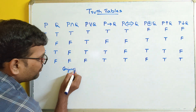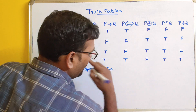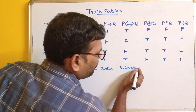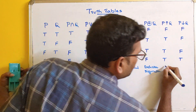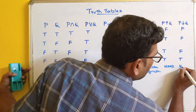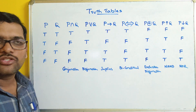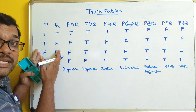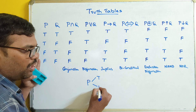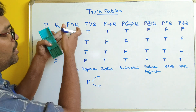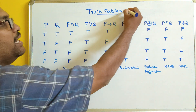So labeling what we have covered: this is conjunction, this is disjunction, this is implies or conditional, this is biconditional, this is exclusive disjunction, this is NAND, and this is NOR. These are all the different connectives forming simple compound propositions using two simple propositions. Finding the truth value for all combinations in tabular form is what we call a truth table.